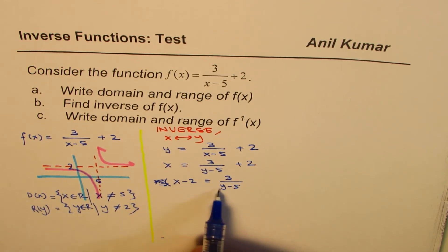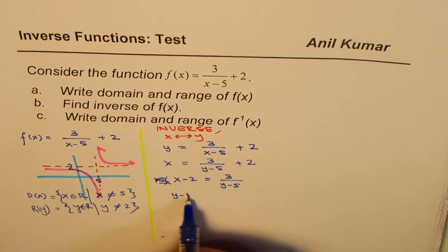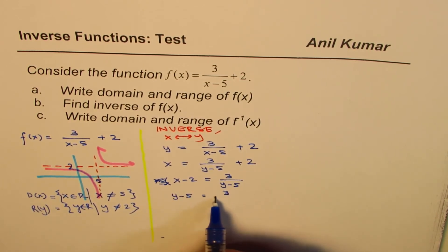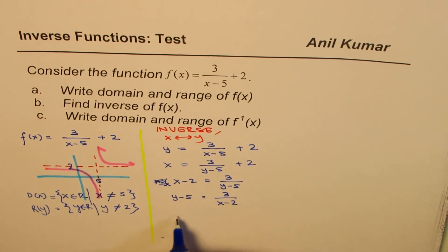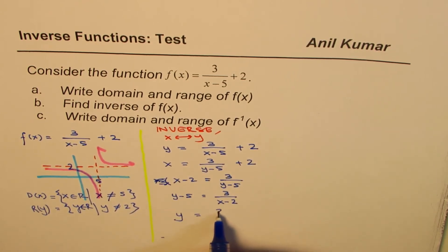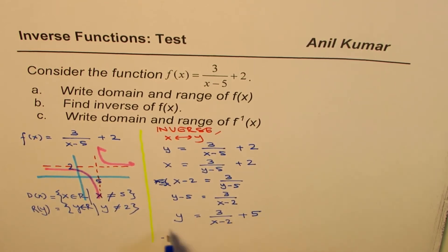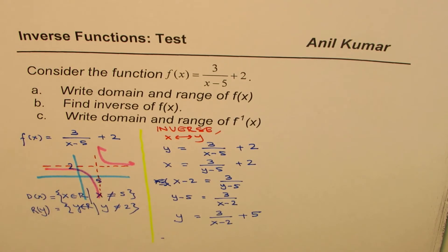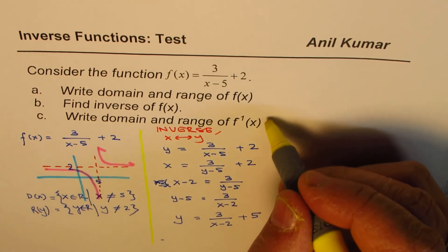Now we'll cross multiply. See how we are going to isolate y. So we'll cross multiply. This is a good technique. So we get y minus 5 equals to 3 over x minus 2. And we can add 5 now. So we get y equals to 3 over x minus 2 plus 5. Do you see that? So in a way, we have isolated y without even multiplying any term.